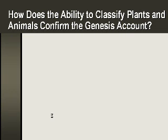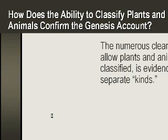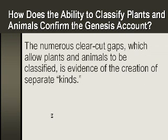The main point of including this chapter is to show that if evolution were true, we couldn't classify living things. There wouldn't be these distinct differences between animals that can't interbreed with one another. Taxonomy itself — the ability to classify — rather than there being a blur of evolutionary creatures, helps confirm the Genesis account. These gaps allow plants and animals to be classified.